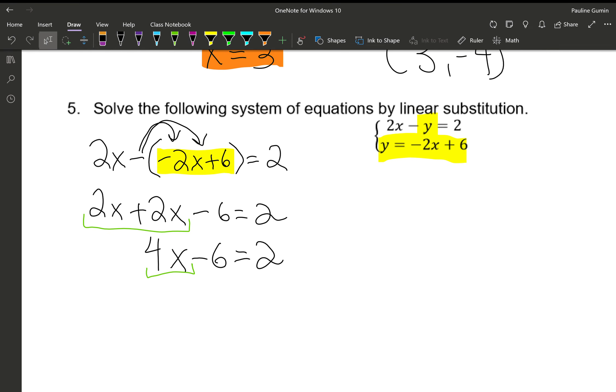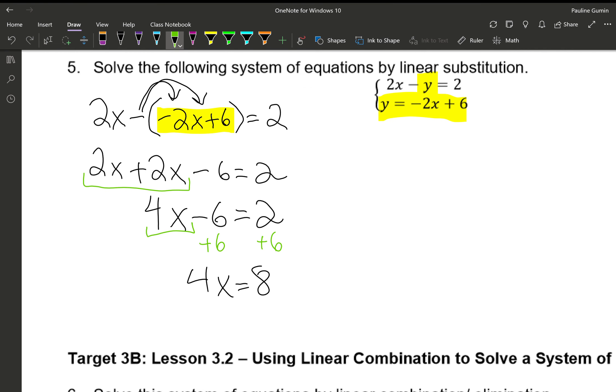What do you think we should do next? Let's add 6 to both sides. So now we have 4X equals 8. And what's our famous last step? Divide by 4. X equals 2. Now that we have an X equals 2, let's plug it into our Y equals equation. Y equals negative 2 times 2 plus 6, which means Y equals negative 4 plus 6, Y equals 2. So our final answer, 2 comma 2, X comma Y.